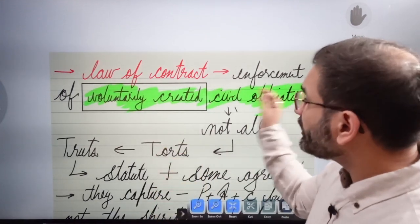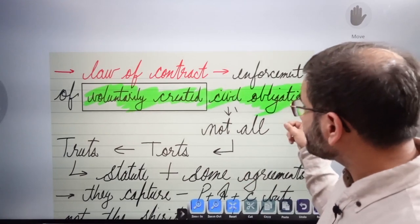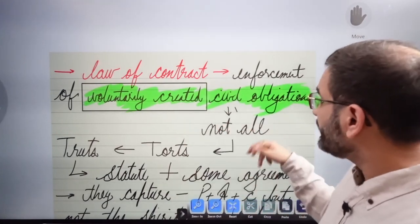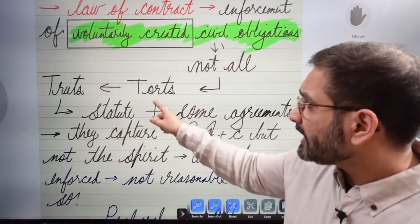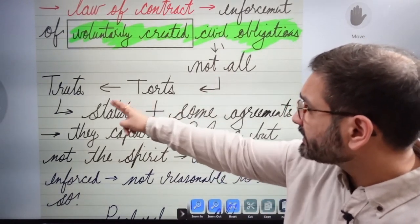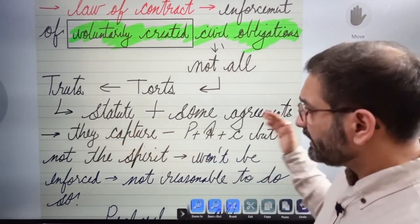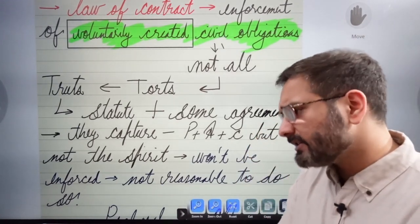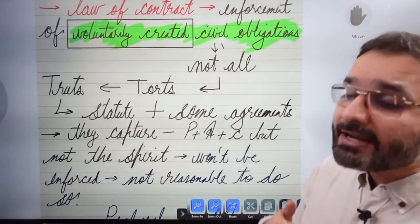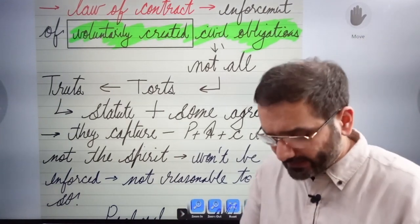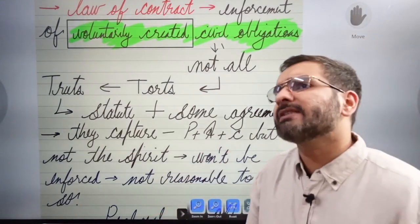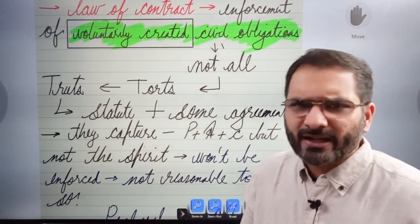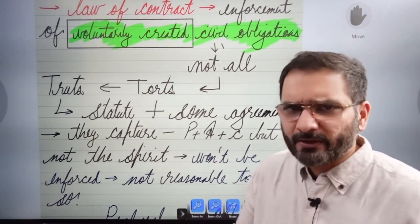The law of contract is the enforcement of voluntarily created civil obligations — write this down. But not all civil obligations are covered; some are under the law of torts, some under trusts, some under statutes. Some agreements capture the very essence: there is a proposal, agreement, and consideration, but the parties never intended any legal consequences.